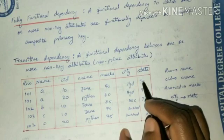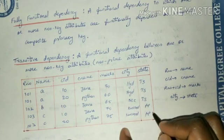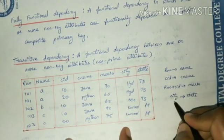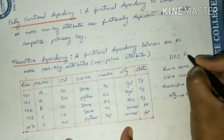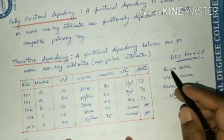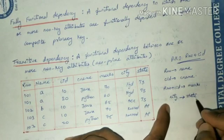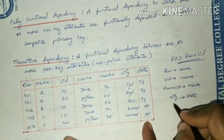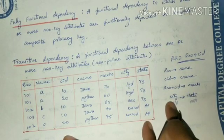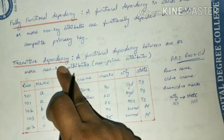For example, if I say the city is Hyderabad, I can directly say the state is Telangana (TS). Kurnool means the state is Andhra Pradesh (AP). So city is determining state. Here city is not a primary key — the primary key is roll number plus course ID. City is a non-prime attribute and state is also a non-prime attribute; neither participates in the primary key. So one non-prime attribute is determining another non-prime attribute, and this type of dependency is called transitive dependency.